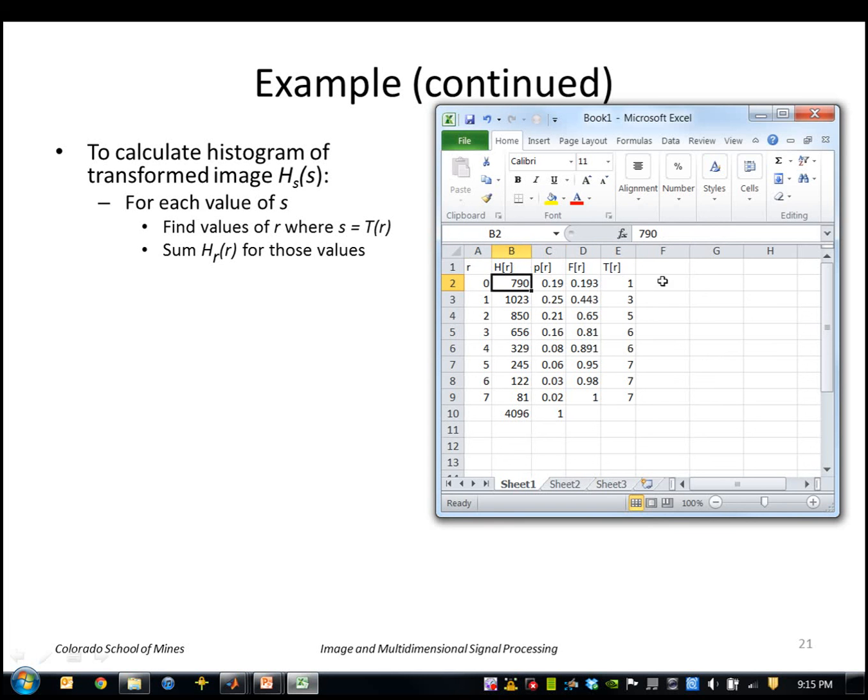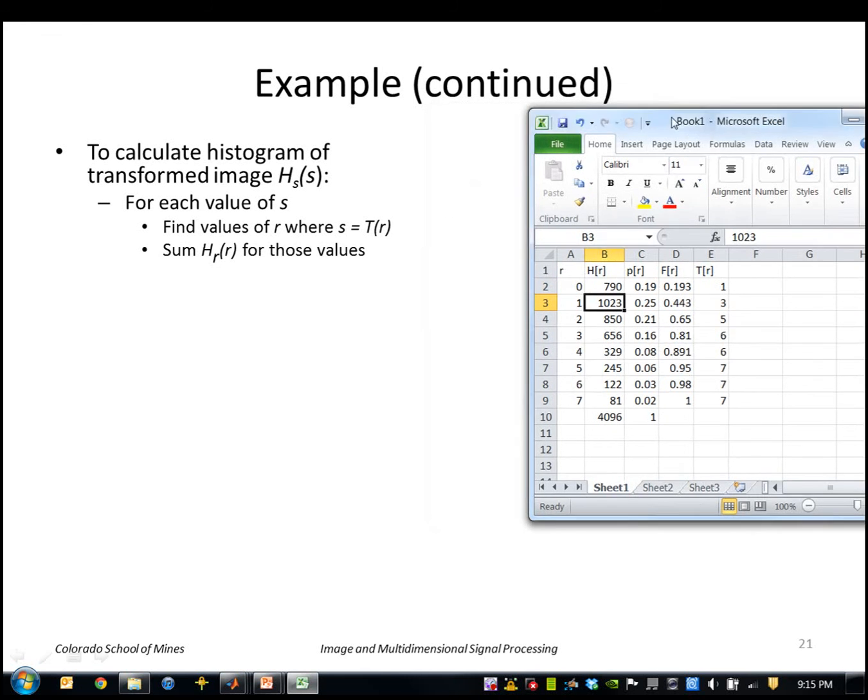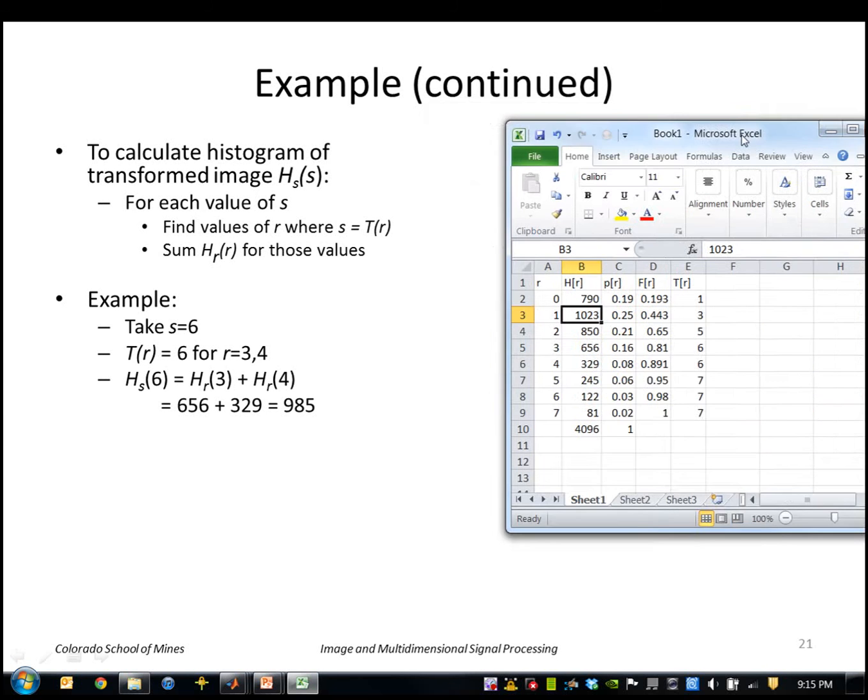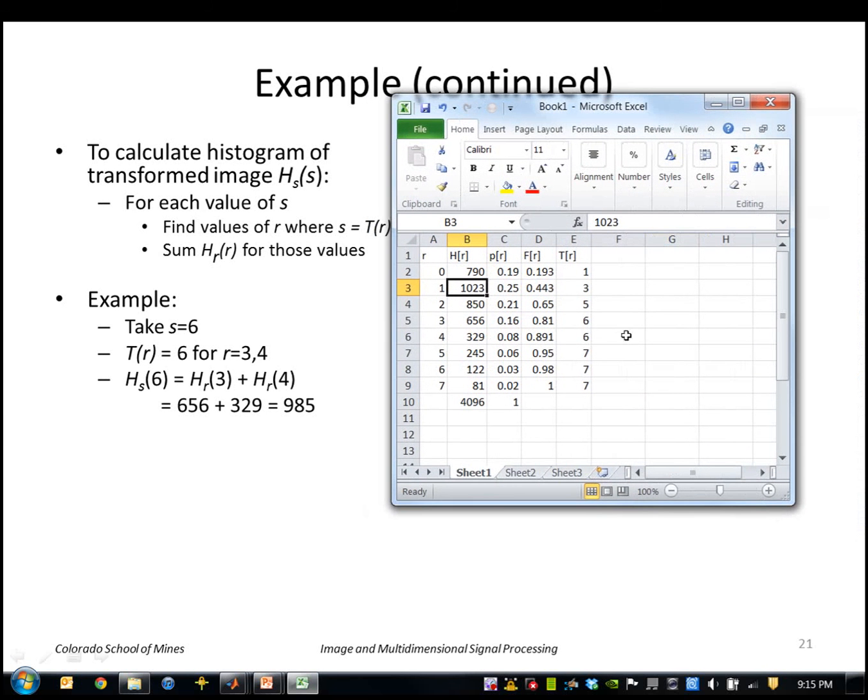So I should see in my output histogram 790 for that value. Another example might be 6, so if I look at the values 6 in the output image those came from a 3 and a 4 from the input. So both of these contributed which means I have a total of 656 plus 329 which is 985.